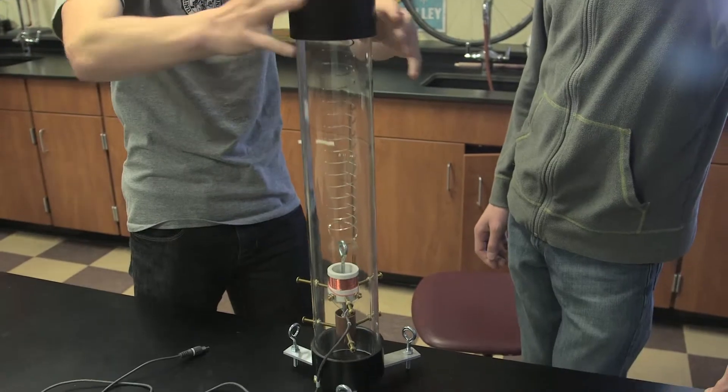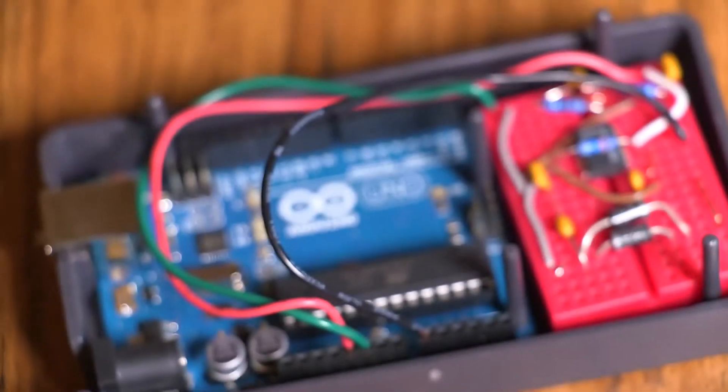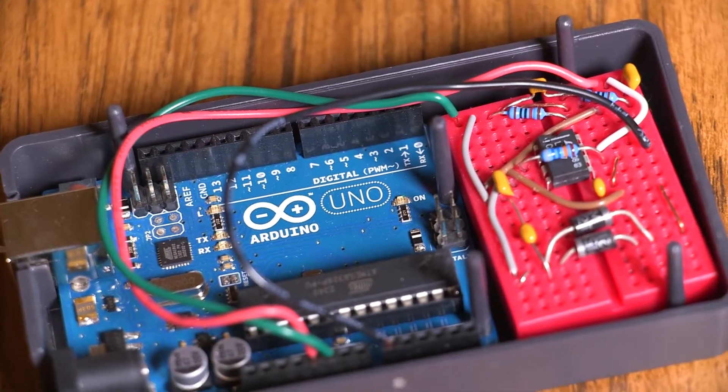As the magnet passes up and down through the coil of copper wire it will generate electrical impulses which are then sent to our Arduino box which magnifies them and turns it into something the computer can read.